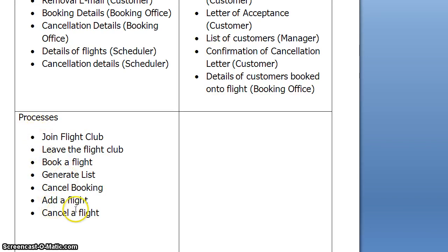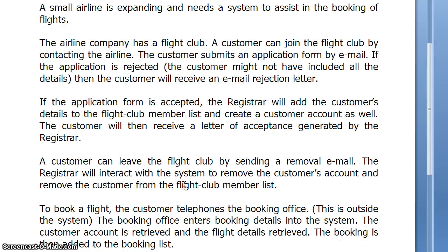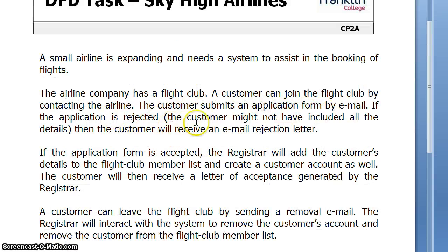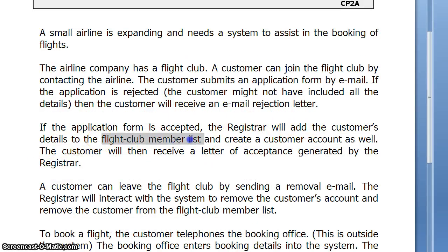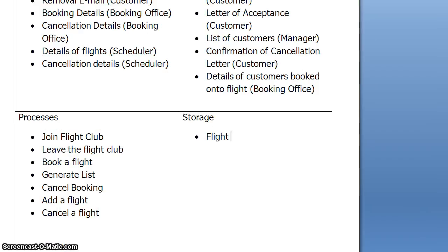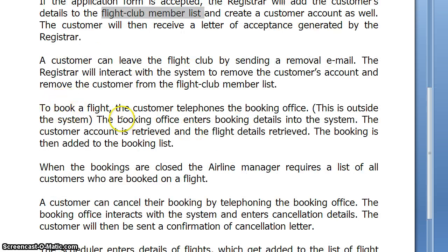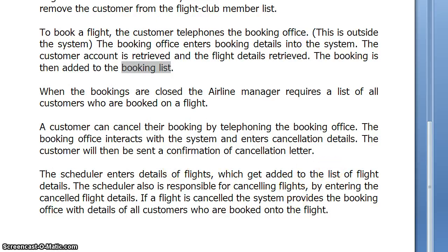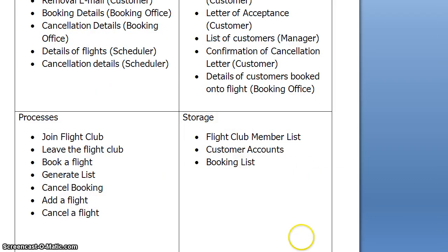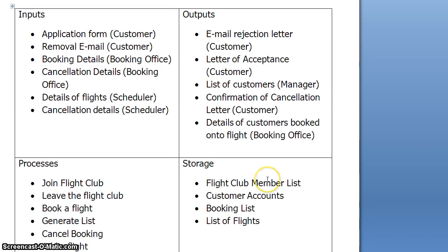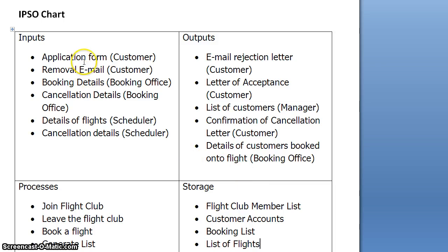The optimum to use should be 6 — we're 1 over, but it's not going to make too much difference. The last box is storage: what storage is required? We need a flight club member list, customer account, a booking list, and a list of flights. And that concludes our IPSO chart, which makes it much easier to then go ahead and produce a set of DFDs.